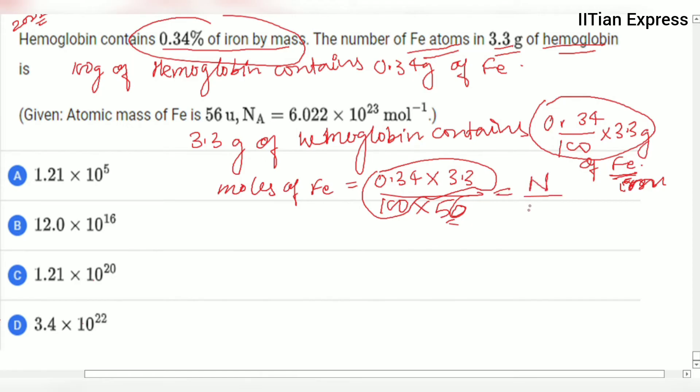Further, this can be written like N divided by NA, and we are supposed to calculate this - the number of Fe atoms. We are going to equate capital N equals 0.34 multiplied by 3.3 divided by 100 multiplied by 56, and then multiplied by Avogadro's number.